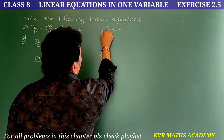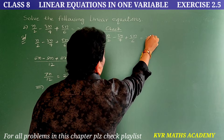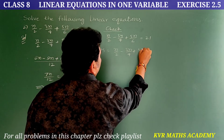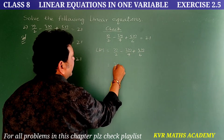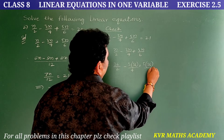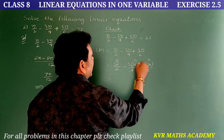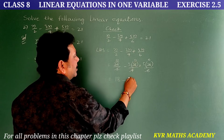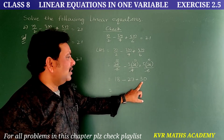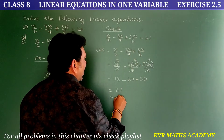Check — given equation: n/2 - 3n/4 + 5n/6 = 21. Take LHS, substituting n = 36: 36/2 - 3×36/4 + 5×36/6 = 18 - 27 + 30. Then 18 + 30 = 48, and 48 - 27 = 21. That equals the RHS.